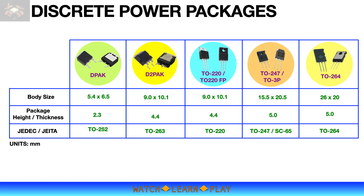TO247, TO3P, and TO264 are the largest through-hole TO packages. These packages have larger body size and can accommodate larger die sizes of high-powered discrete devices. I recommend checking the JEDEC standard package outline drawings for dimension details. Most JEDEC standards are free if you register and create an account.